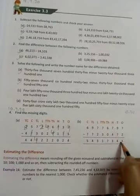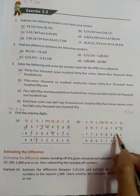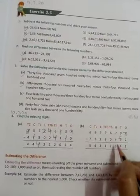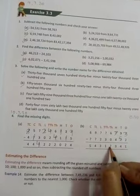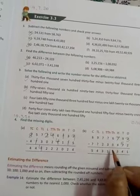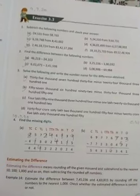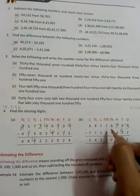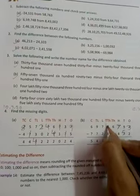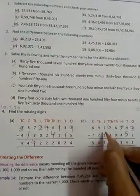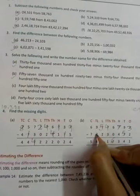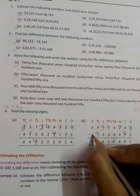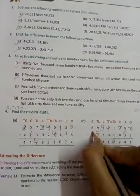Subtrahend is missing, subtract 5 minus 4 is 1. Minuend is missing, add 4 plus 4 is 8. Minuend again missing, add 2 plus 1 is 3. Subtrahend missing, subtract 9 minus 4 is 5. Minuend missing, add 4 plus 3 is 7. Difference missing, subtract 6 minus 0 is 6. Minuend missing, add 3 plus 1 is 4. Minuend missing, 2 plus 3 is 5. Subtrahend missing, 9 minus 4 is 5. Subtrahend missing, 6 minus 5 is 1.